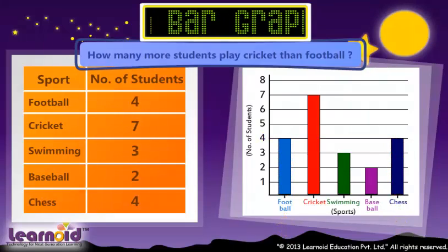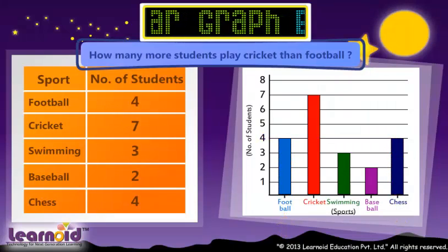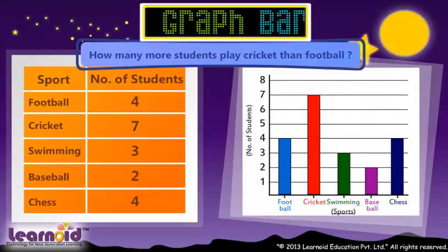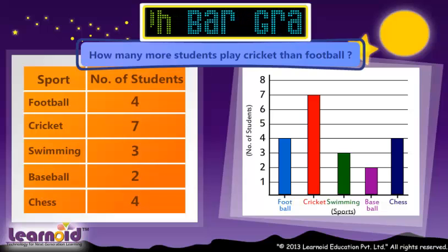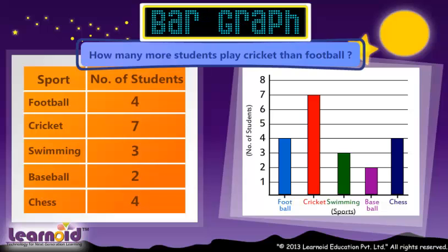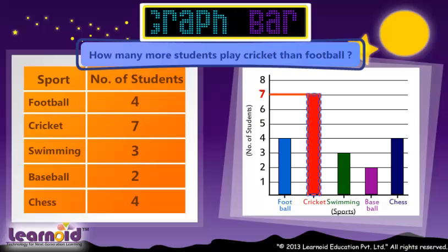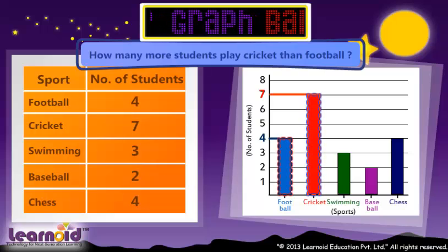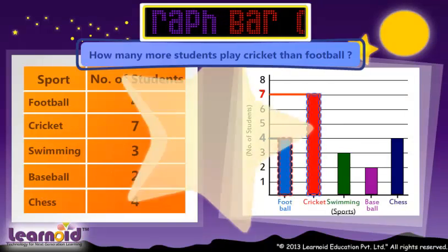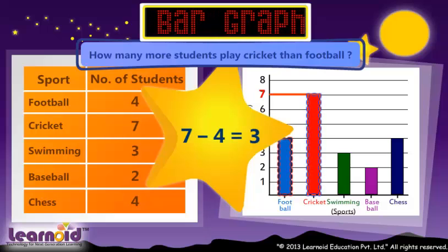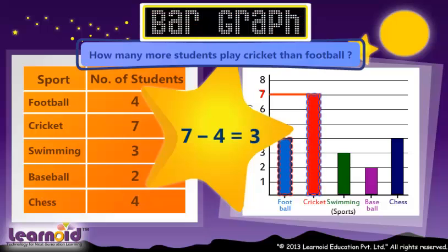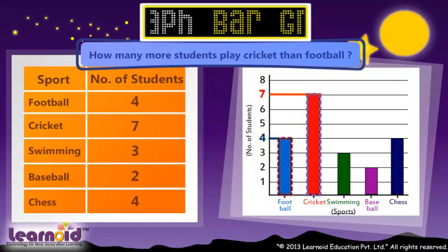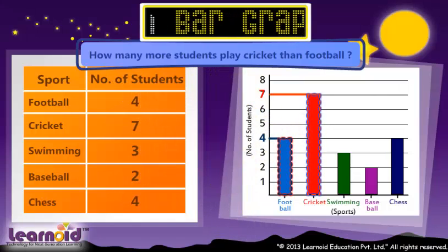How many more students play cricket than football? From the Bar Graph, 7 students play cricket and 4 play football. 7 minus 4 is equal to 3. So three more students play cricket than football.